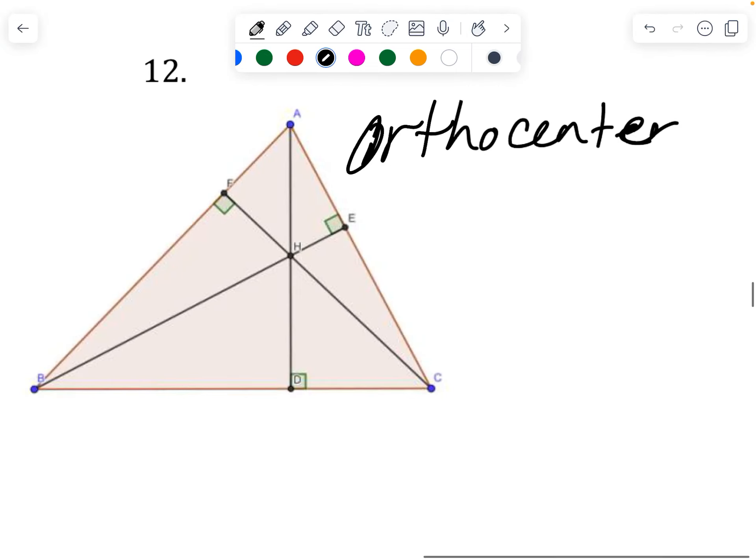The more challenging ones to differentiate between is orthocenter versus a circumcenter. Is this perpendicular bisectors or is this altitudes? Two ways you can check for a perpendicular bisector. See if it's marked, which it clearly is not.